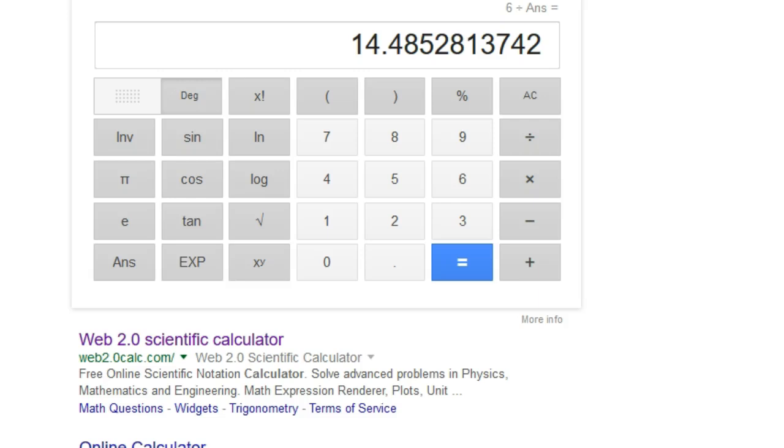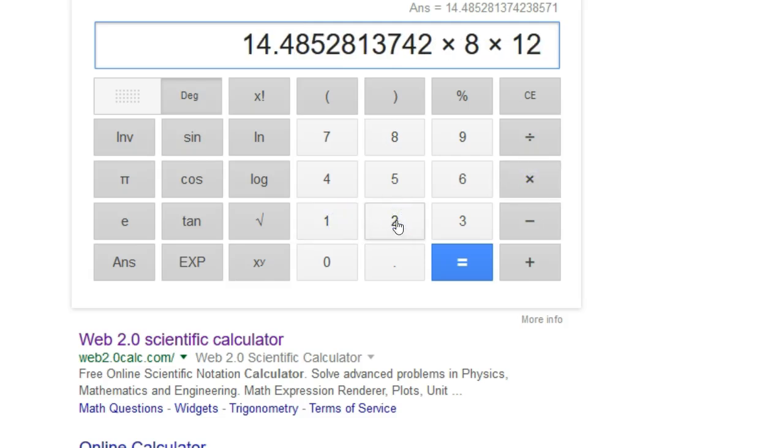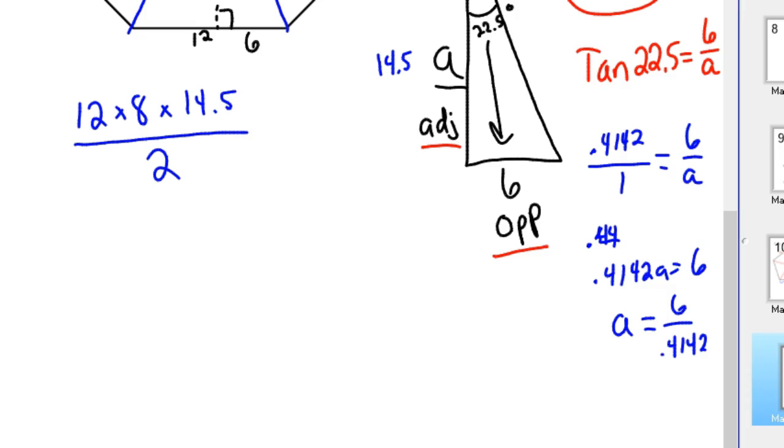And we've got the 14.48, we'll just use that number. Times the 8 sides. Let me clear that out. I think we can just go ahead and backtrack that out. Times the 8 sides. Times the length, each side is 12. Hit equals. Divide that by 2. I hit the wrong button there. Getting kind of punchy. Divided by 2. And our area is 695.3 meters squared.